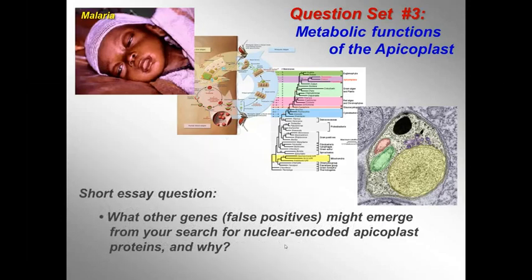Question 3.2 is a short essay question: What false positives might emerge from your search for nuclear-encoded apicoplast proteins, and why would you expect these to emerge from your computational search?